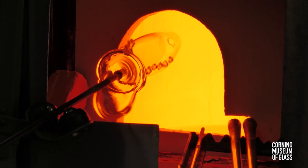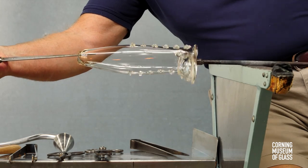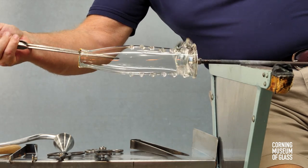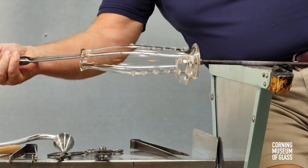The opening is reheated. When the glass softens, the hole is opened to a diameter of about an inch and a half or two inches, and it's given its final flaring shape.